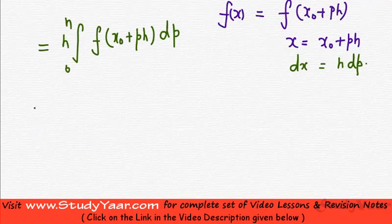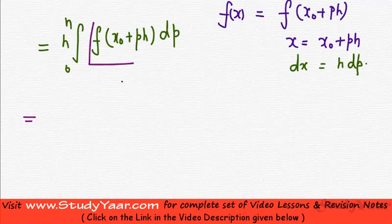Now my Newton's forward integration formula tells me that this is going to be equal to integral h into 0 to n.